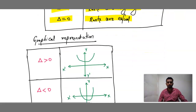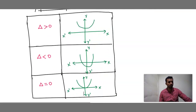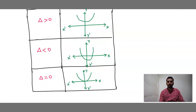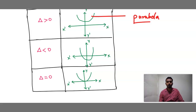Graphically: when delta is greater than 0, the parabola is above the x-axis. When delta is less than 0, the values come in the imaginary part — the parabola is below the x-axis, towards the negative side. When delta is equal to 0, the parabola touches the x-axis. You can expect a one-mark question where they give the graph and ask you to write the nature — simply identify whether it is above, below, or touching the x-axis.